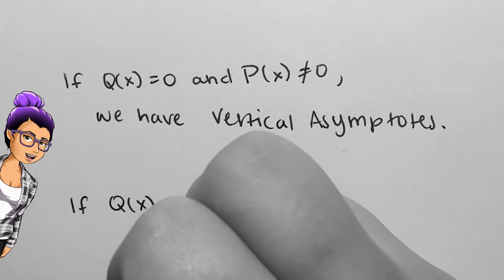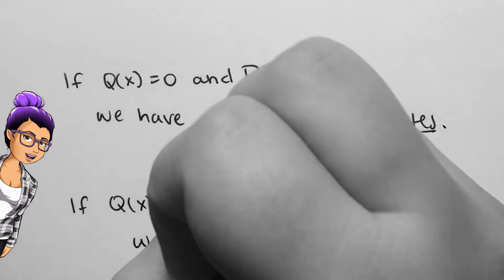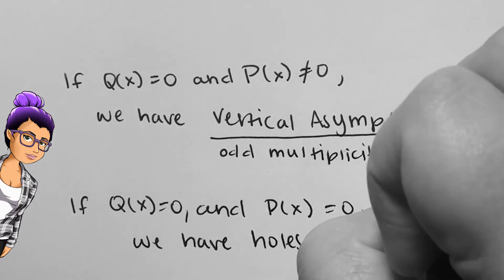Note that the multiplicity of the 0 of q will determine the asymptotic behavior. If the multiplicity is odd, the asymptote will have behavior going in opposite directions, as one side of the asymptote goes towards positive infinity, the other goes towards negative infinity.